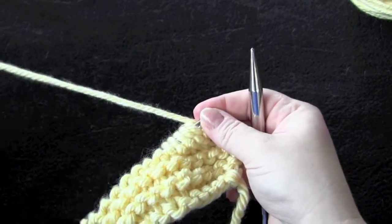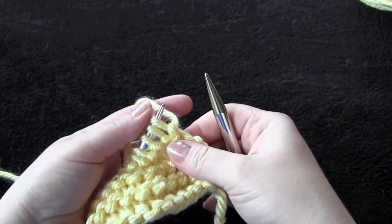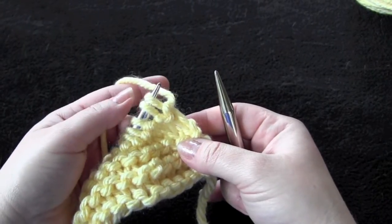This makes a nice stretchy bind off and there are a few different ways that you can do this. The first way that I'm going to show you is by working through the back loops.